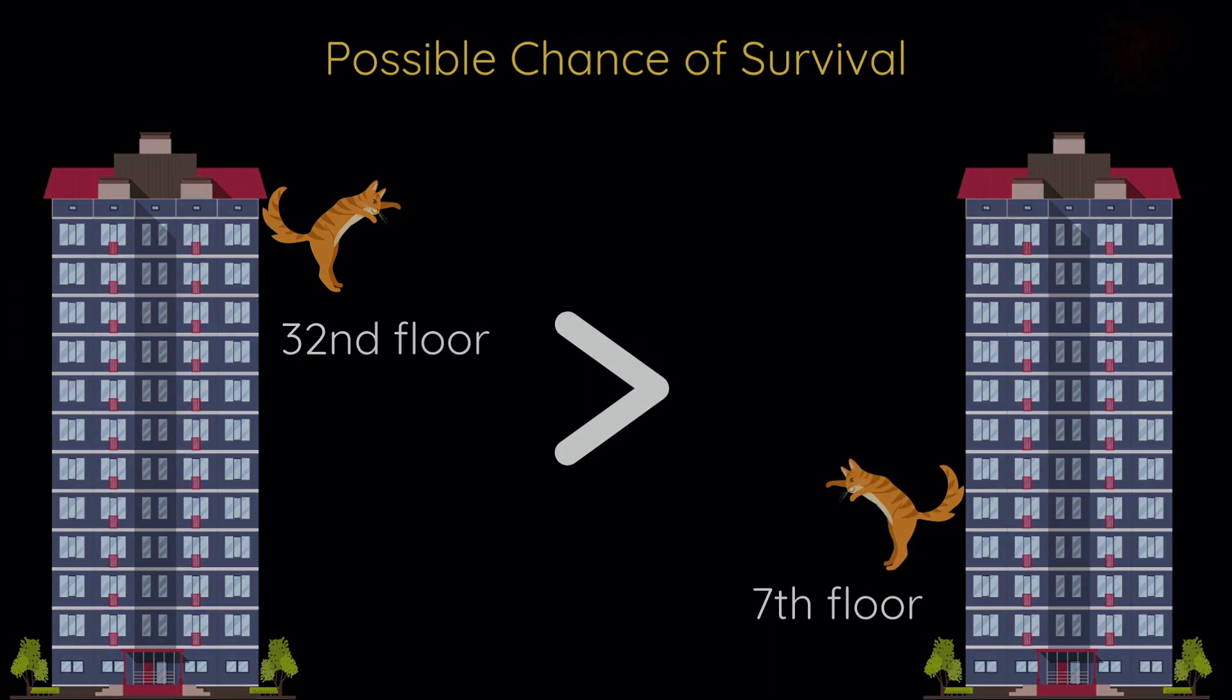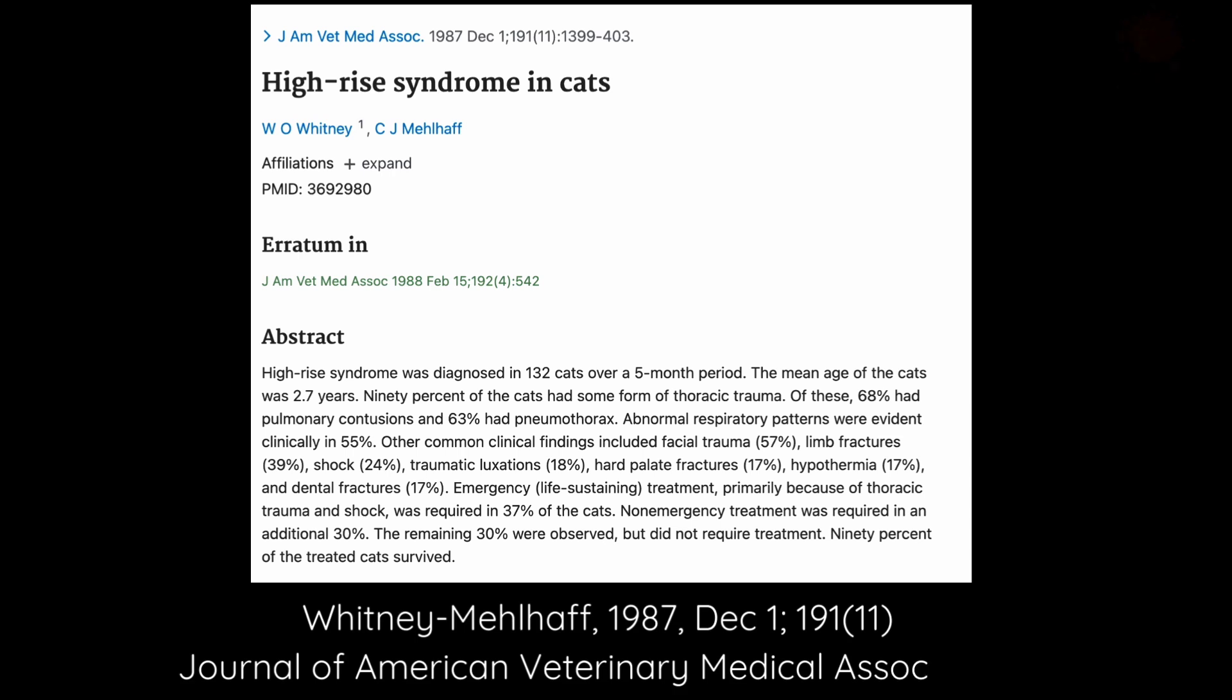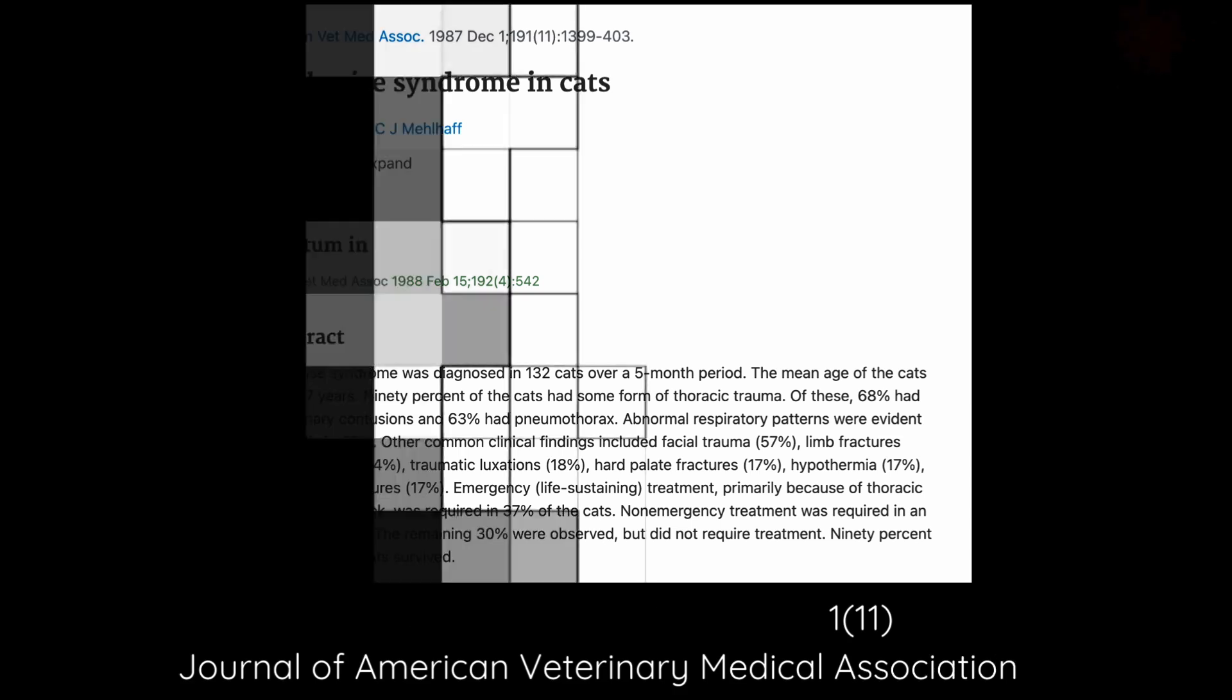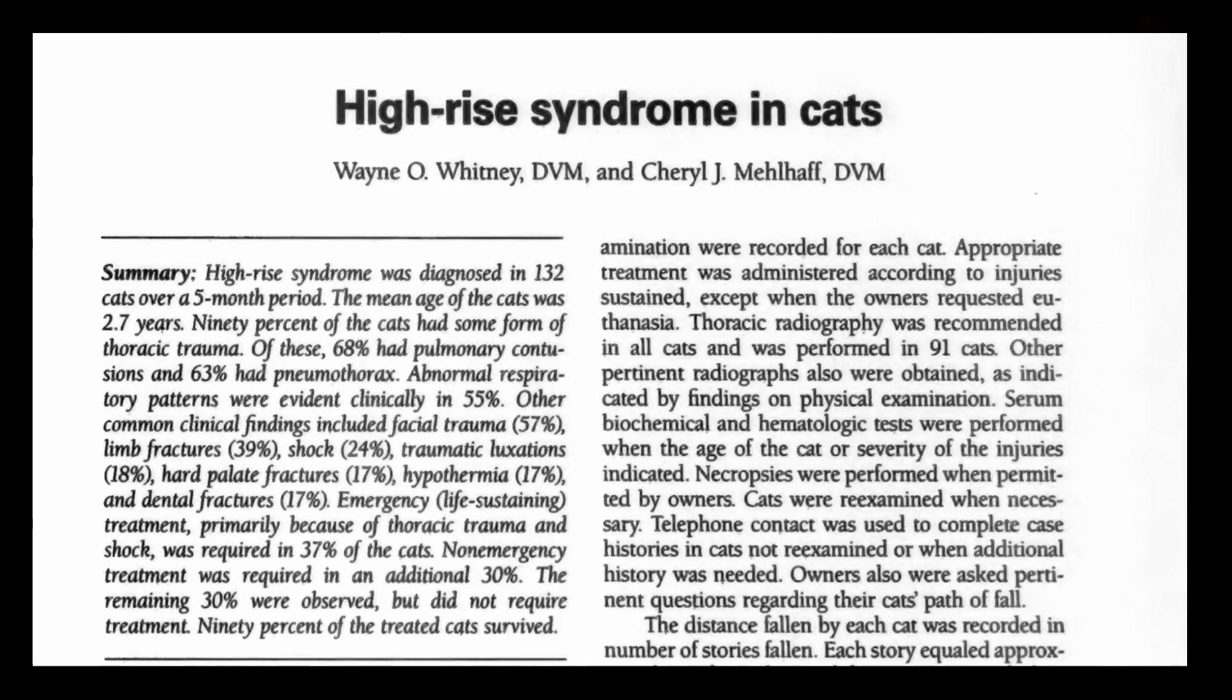Veterinary studies, like the famous 1987 Whitney-Melhoff paper from the Journal of American Veterinary Medical Association, shows that cats falling from higher than seven stories actually have better survival rates than those falling from two or three stories. This phenomenon is called the high-rise syndrome. Of course, this doesn't mean that cats walk away unscathed—they still suffer injuries. But the surprising part is that their chances of surviving a fall increase beyond a certain height.